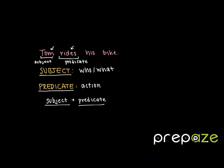So for example, let's look at the following. Let's say that I have 'ride his bike.' When I look at this, I'm a little bit confused. I'm thinking: who rides his bike? What rides his bike? I have so many questions regarding who is actually performing the action. So in this sentence, I would say that we are missing the subject because we don't know who is performing the action.